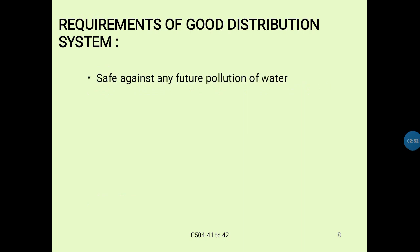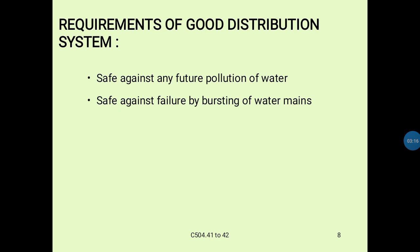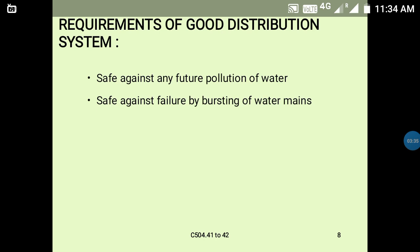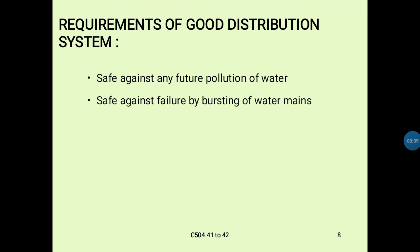Next: safe against any future pollution of water. The system should protect against future water pollution. Also, safe against failure by bursting of water mains — if water mains burst, it can pollute the water supply.